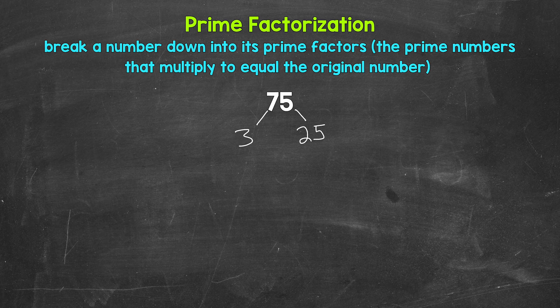Now keep in mind, there are other factors that we could have started with here. For example, we could have started with five and 15. Depending on the number, there can be multiple different factors that we can use. So there can be multiple ways to do these. But in the end, we will get the same prime numbers, and that's what's important.